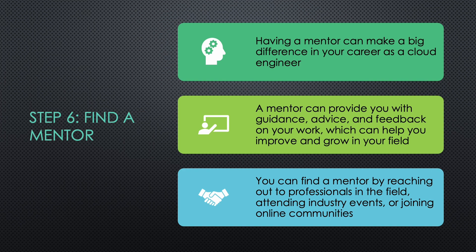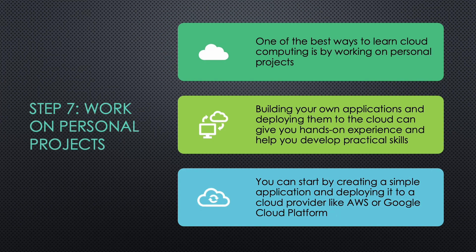Step 7: Work on personal projects. One of the best ways to learn cloud computing is by working on personal projects. Building your own applications and deploying them to the cloud can give you hands-on experience and help you develop practical skills. You can start by creating a simple application and deploying it to a cloud provider like AWS or Google Cloud Platform. As you gain more experience and knowledge, you can take on more complex projects that challenge you and help you grow.